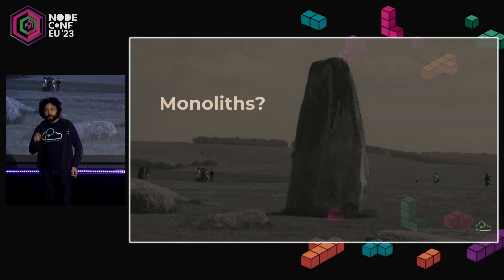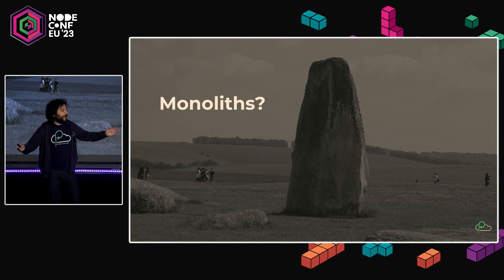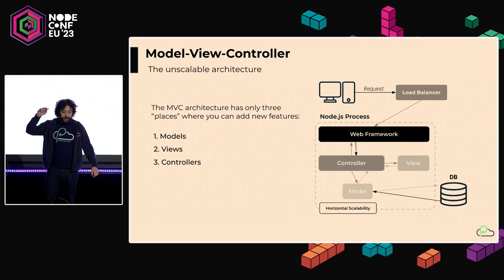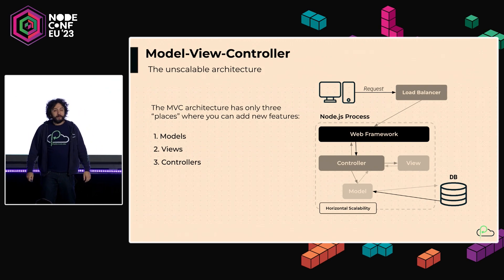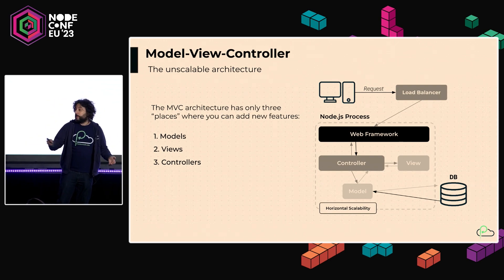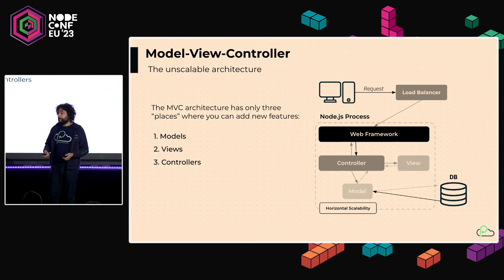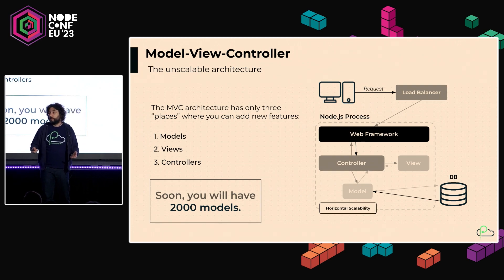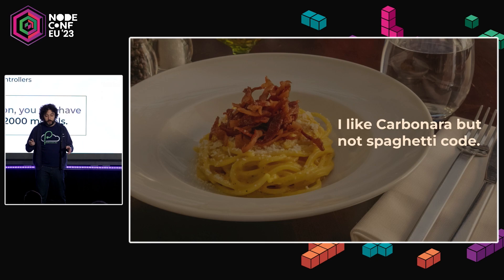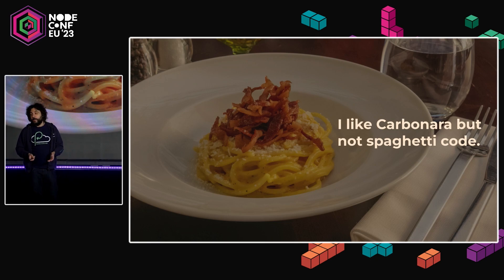So first of all, let's start. Do you like monoliths? You all like monoliths? So you like the MVC pattern, right? The MVC pattern tells you that if you're developing software, you are either writing a model, a view, or a controller. You write them in three boxes, and I've done it so many times that I'm a little tired of it. Soon you have 2,000 models in your models folder. And I love carbonara, by the way.